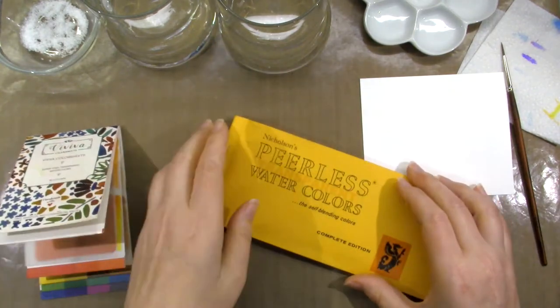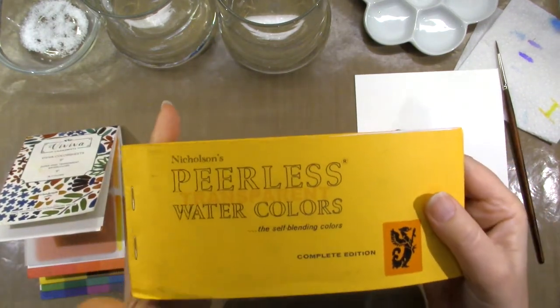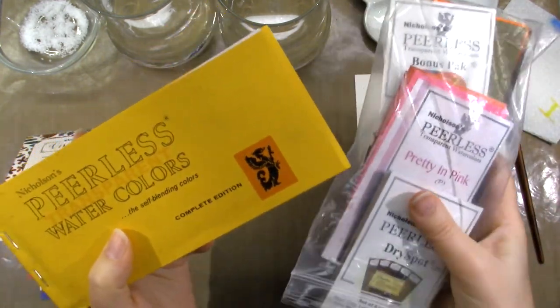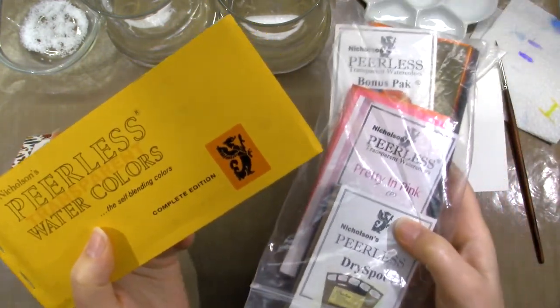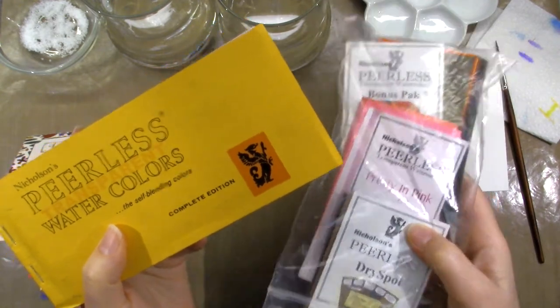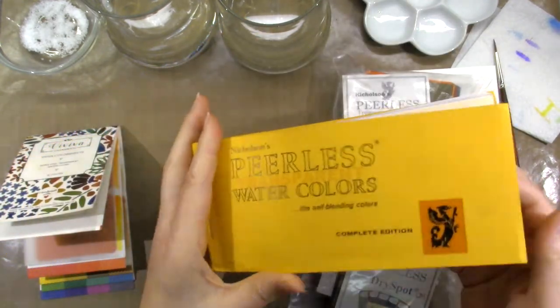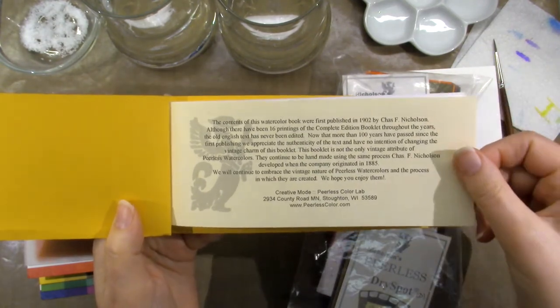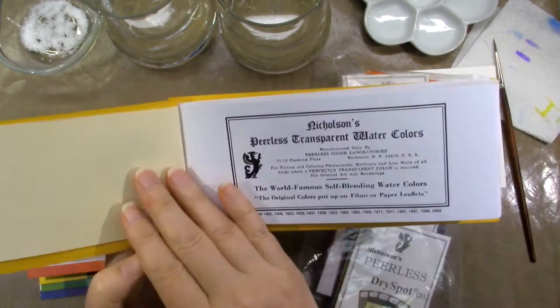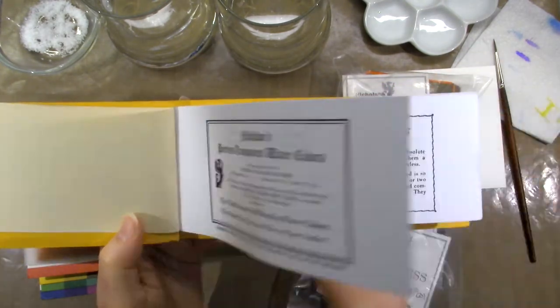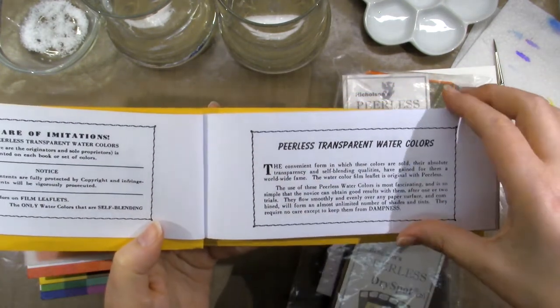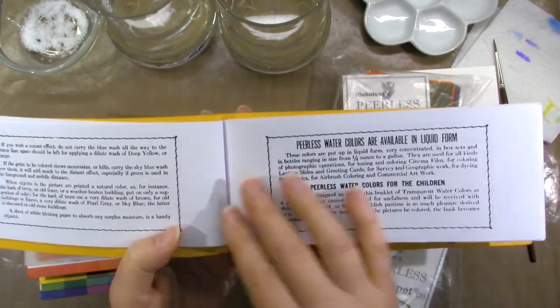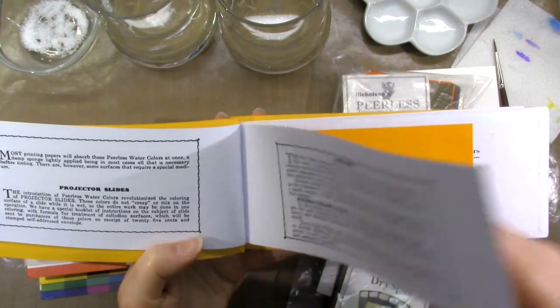The Peerless Watercolors Complete Edition comes as a booklet, but there are also separate packs that you can buy, and these just come loose. The Complete Edition includes a cover, an introductory page, then 6 pages of instructions and information taken from the original 1902 version, and then finally 15 pages of colors.